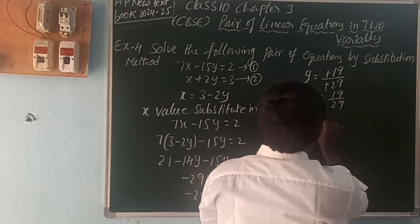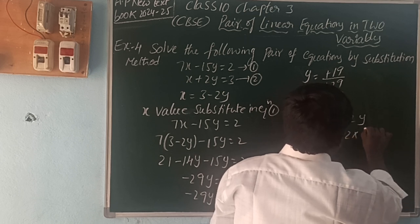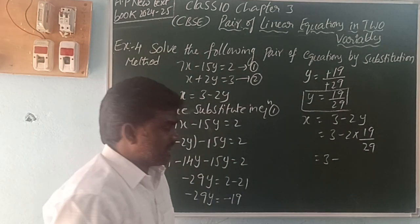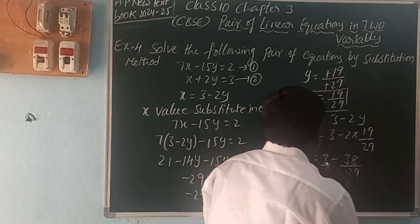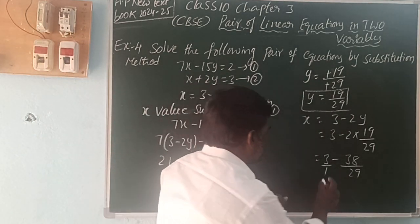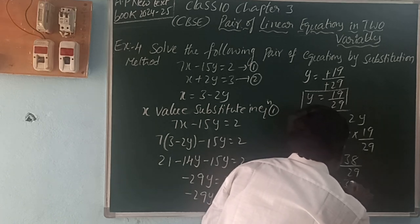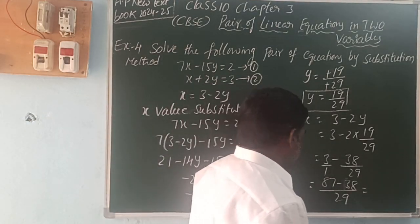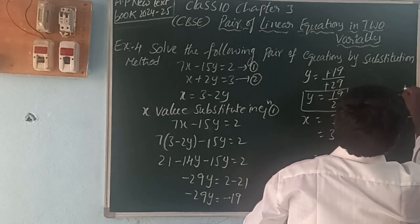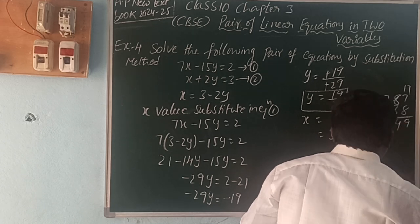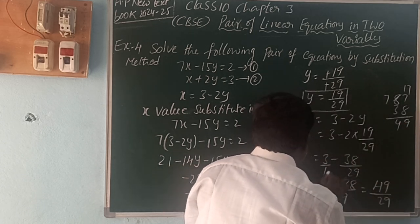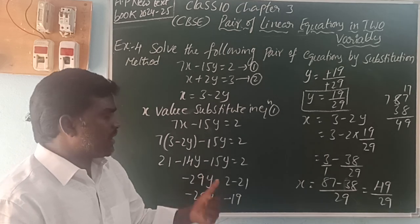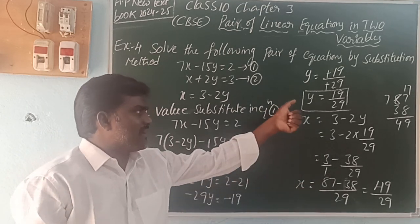So the y value is 19 by 29. Then you can find the x value. x is equal to 3 minus 2y, that is 3 minus 2 into 19 by 29, which gives 38 by 29. Writing 3 as 3 by 1 and doing cross multiplication: 87 minus 38 by 29, that is 49 by 29. So the x value is 49 by 29 and the y value is 19 by 29.